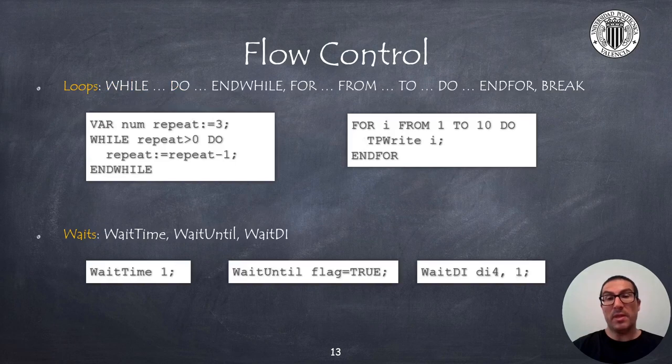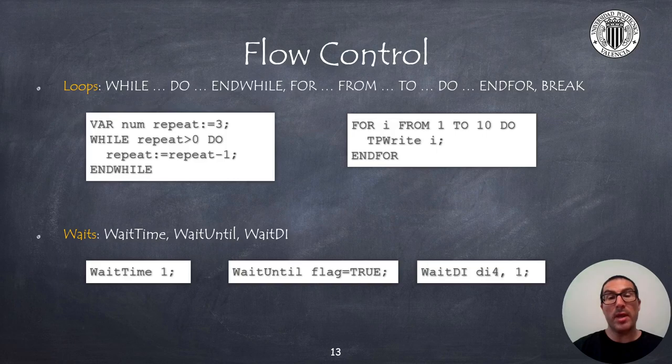Loops allow you to repeat a given set of instructions for a given number of times. For that, we can use the while or the for keywords. We can break the execution of loops with the break instruction. If we want to make a wait, we can simply use the wait time function, but we can also make a conditional wait for an expression to become true or until a digital signal takes an indicated value.